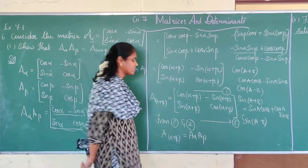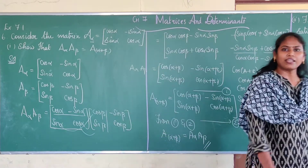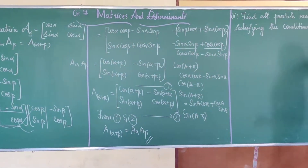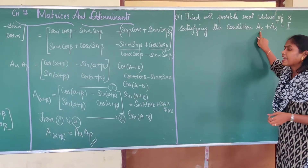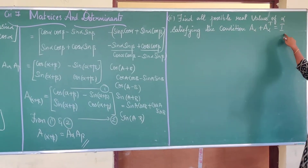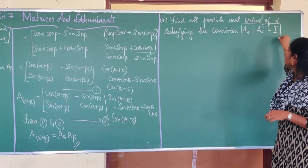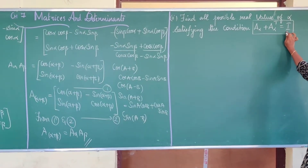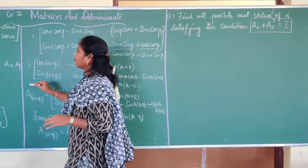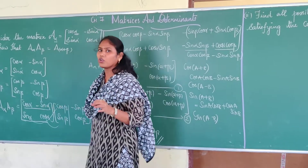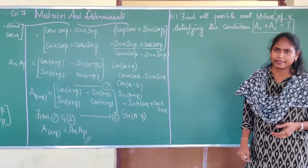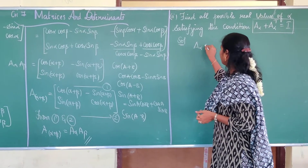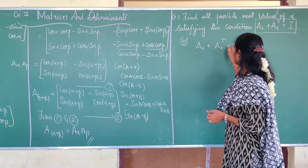Next, we have another part of this question: find all possible real values of α satisfying the condition A(α) + A(α)ᵀ = I. They have given you a condition — A(α) + A(α) transpose equal to I — and using this condition you are going to find the value of α, that is all real values α can take.